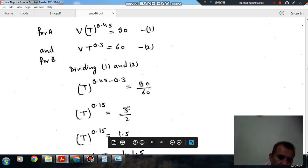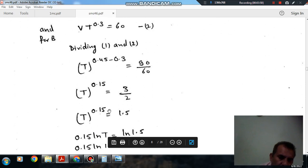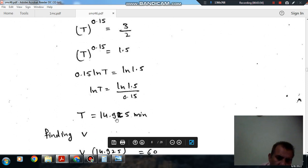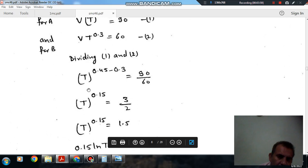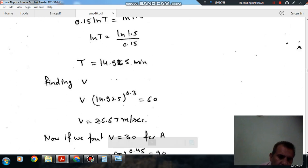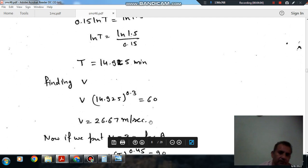So T raised by 0.15 is equal to 3 by 2, or from this, taking ln and we can find out T. So T is 14.95 minutes. So now we can put in either of the equations and we can find out V. So V comes to 26.67 meter per second.